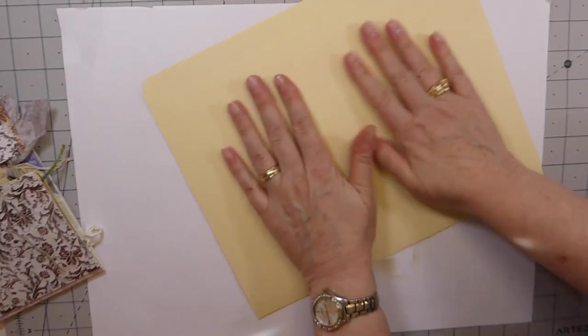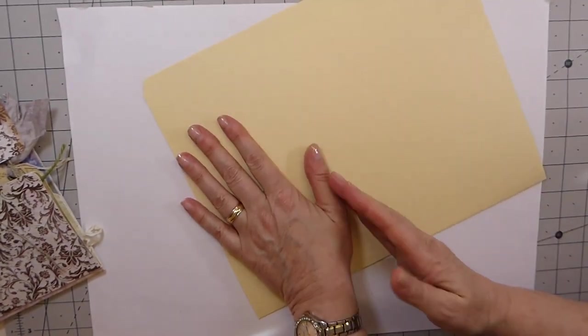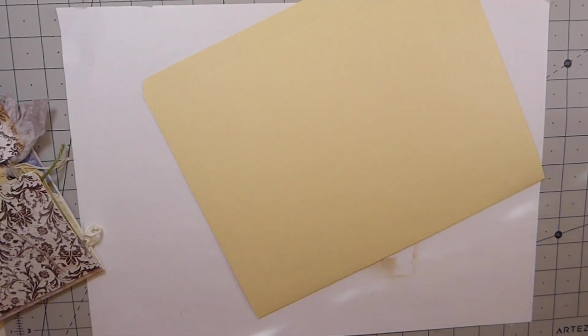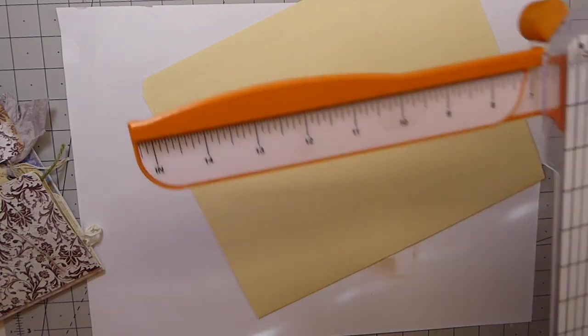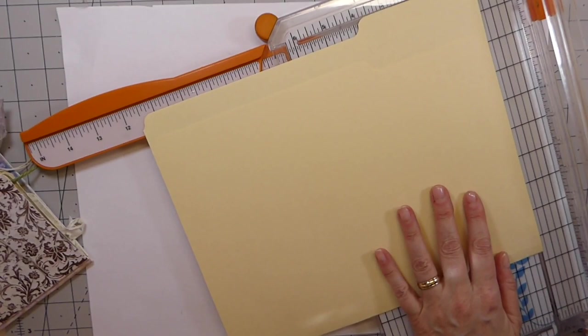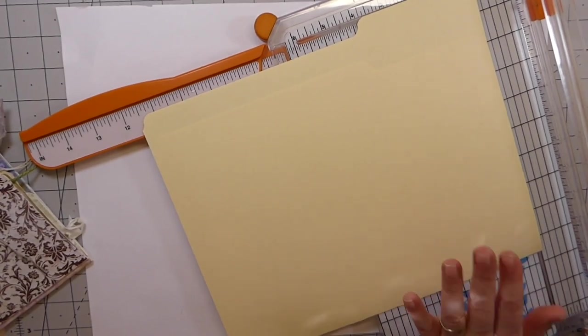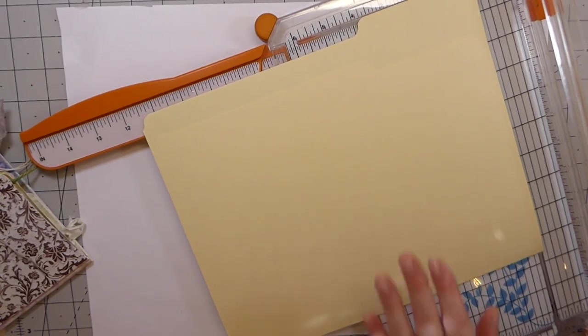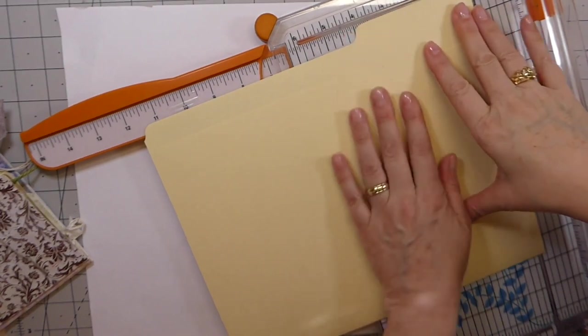What we'll do in this first part is just get the base of it made, and then the next section we'll just start covering it with the papers and take it from there. So you could do this with cardstock.